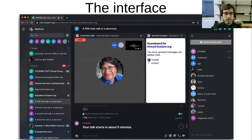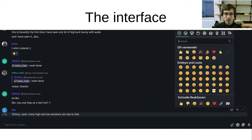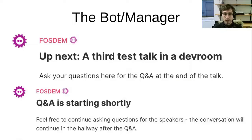The moderator helping the speaker with questions and answers can see which questions are most relevant to the community. To give a thumbs up to questions, you can react to a message by hovering over it — a small set of boxes will appear at the right where you can click the emoticon icon. We also have an automatic bot for the chat system which will announce which talks are coming and when events are going to happen — it will announce when a Q&A is about to happen and when a new talk is going to start, helping the public know what is going on.